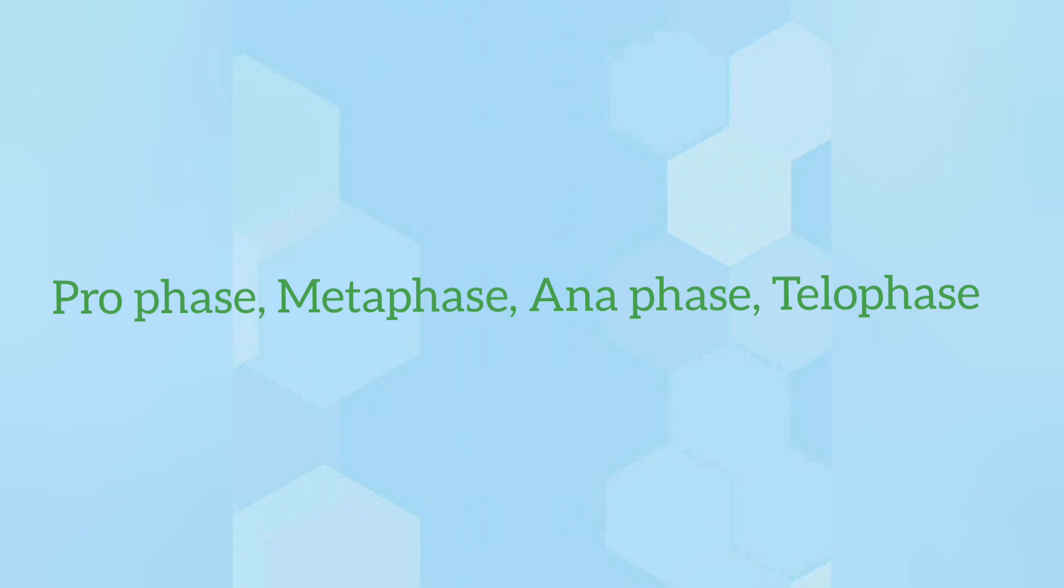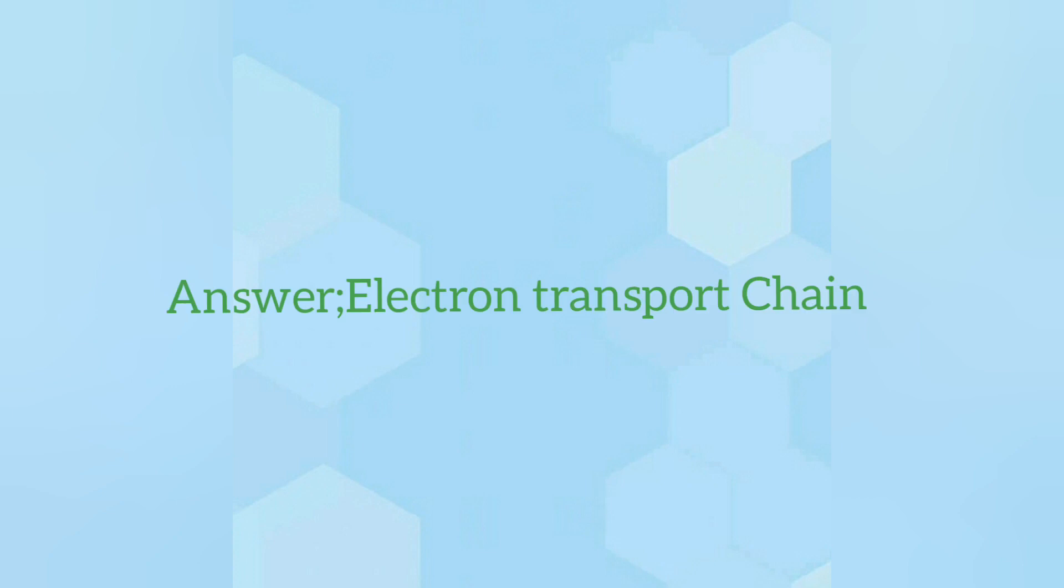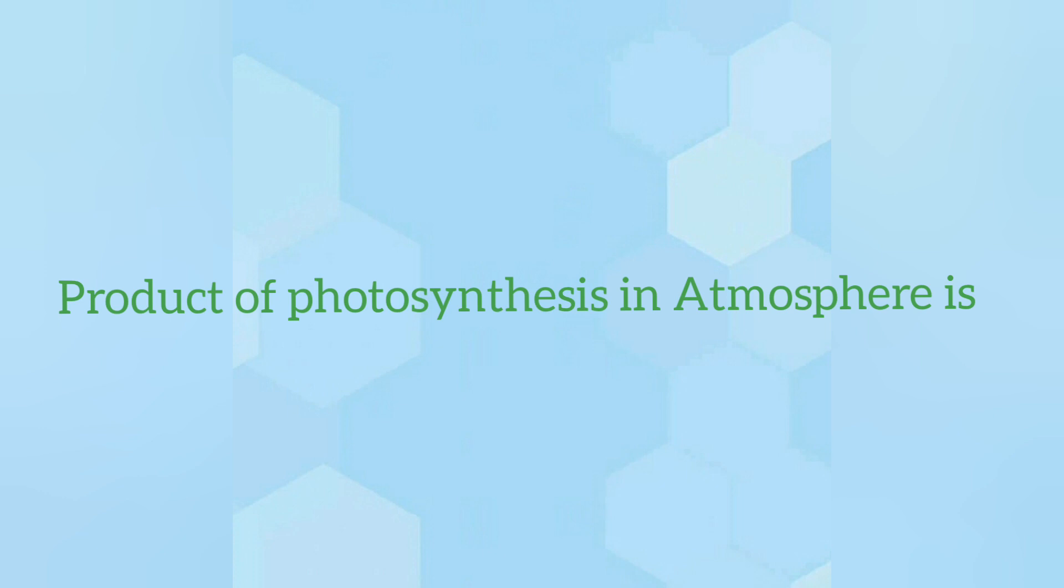Another MCQ is from bioenergetics chapter. It says that terminal electron is accepted in which step. Remember this MCQ is from electron transport chain process. Another MCQ: the product of photosynthesis in atmosphere is, and the answer is oxygen.